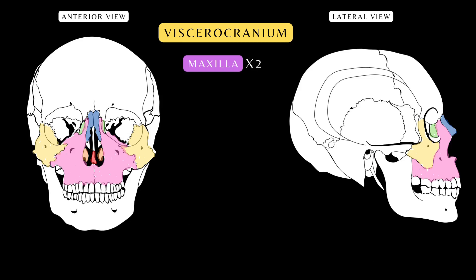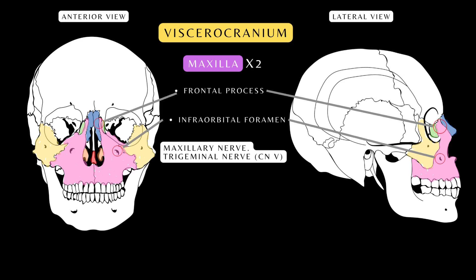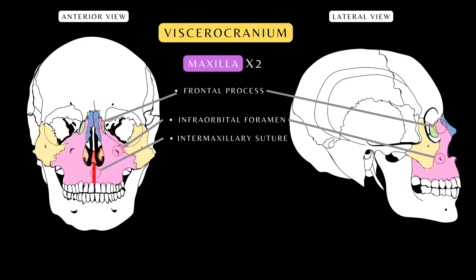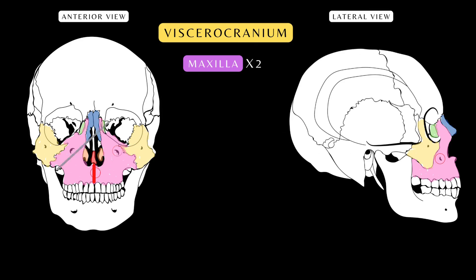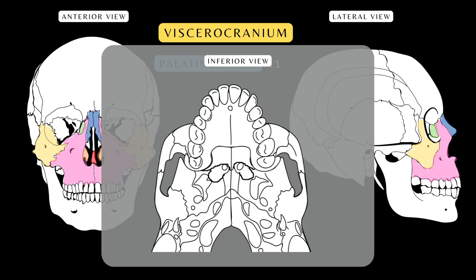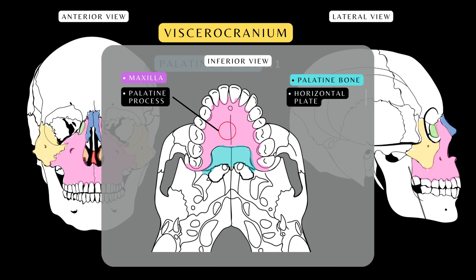The maxilla is an important paired, irregularly shaped bone of the face. The frontal process articulates with the frontal bone. The infraorbital foramen is where the infraorbital branch of the maxillary nerve — the V2 division of the fifth cranial nerve — exits the skull. The two halves fuse together at the midline to form the intermaxillary suture. The palatine bone is closely related to the maxilla. The palatine process of the maxilla and the horizontal plate of the palatine bone form the hard palate, which acts as the floor of the nose and the roof of the mouth.